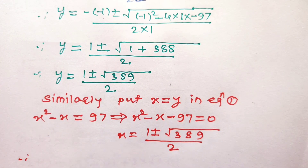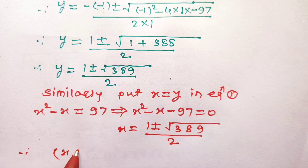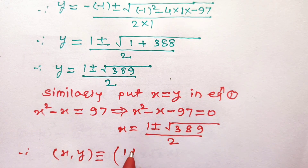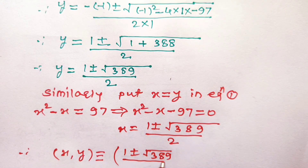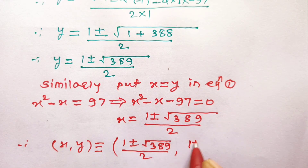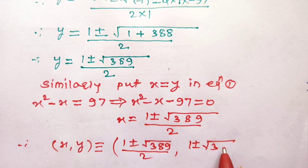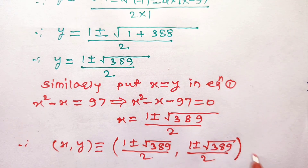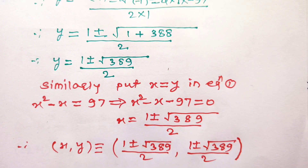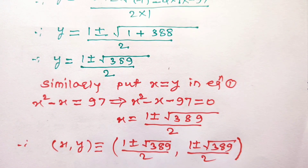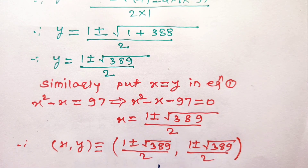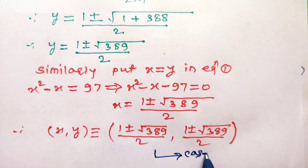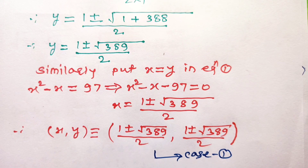Hence, when x = y, the solution pair (x, y) is ((1 plus or minus square root of 389) divided by 2, (1 plus or minus square root of 389) divided by 2). This is one pair of values of x and y which satisfies the given two equations. Consider this as the solution for case number 1.